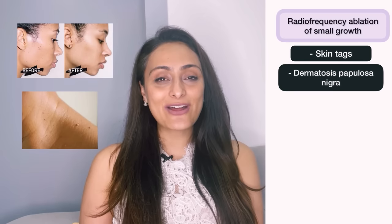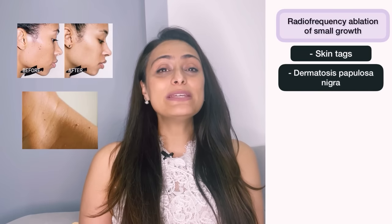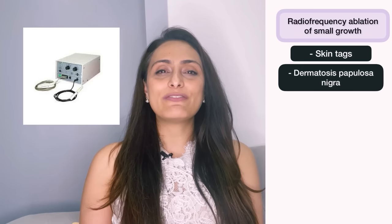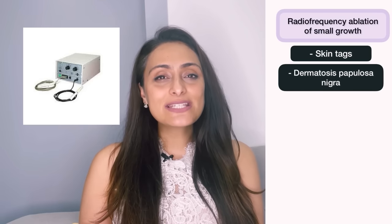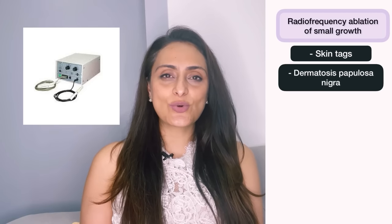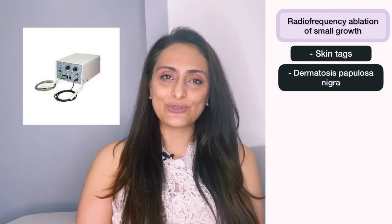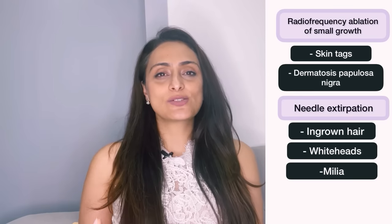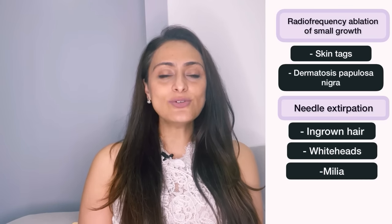Second is radiofrequency ablation. Small growths such as skin tags or dermatosis papillosa nigra can be gently ablated with an RF ablation machine to make skin appear smoother. We can also use needle extirpation to remove ingrown hair, whiteheads, or milia, so the skin looks better.